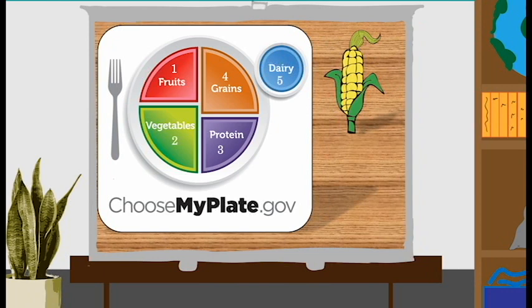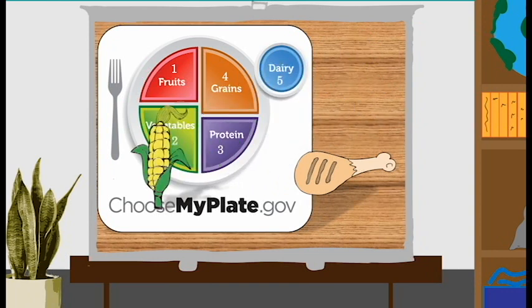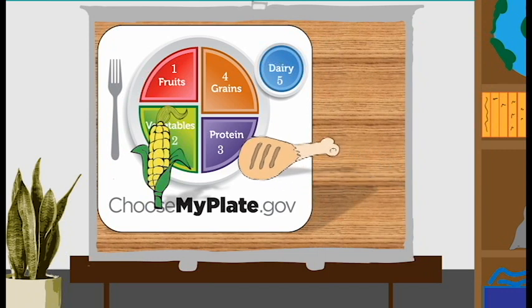Okay. Now we've got some corn and chicken. Which sections do you think they'll go into? Corn goes to vegetables. And the chicken is a protein. Good job.